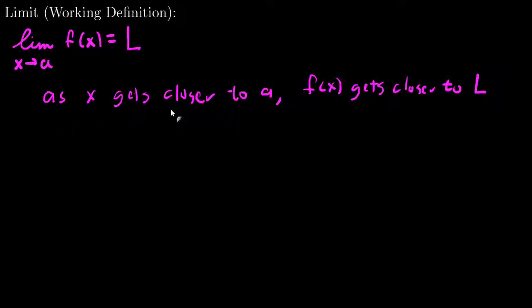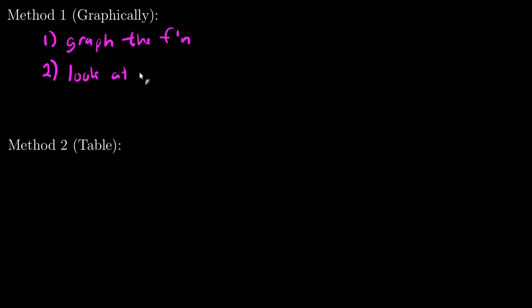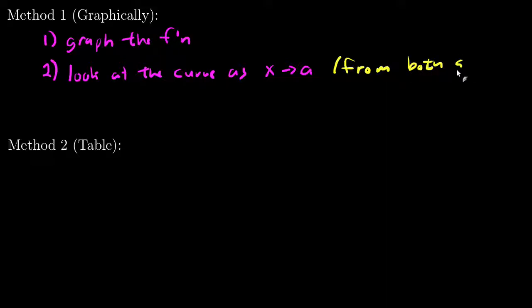There are a couple of ways to do this. One method is looking at it graphically — you can first graph the function, and then look at the curve as X approaches A. The important thing is we have to consider as it approaches A from both sides, meaning from the left and from the right.